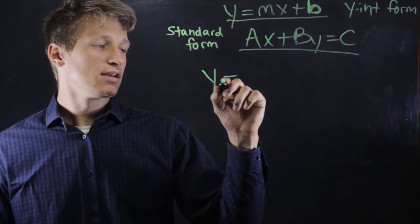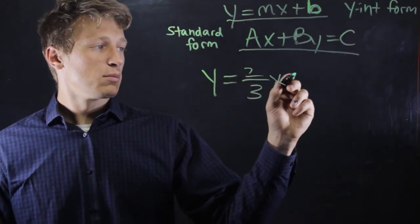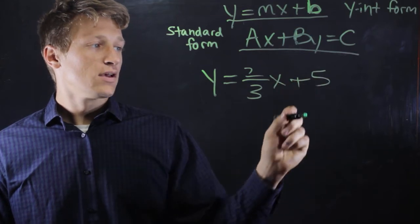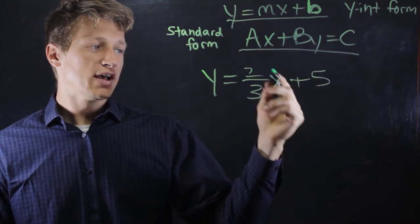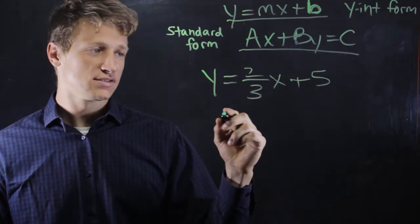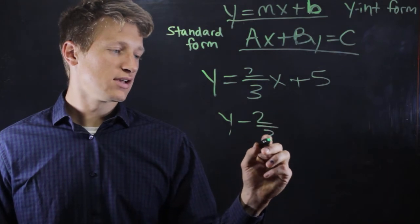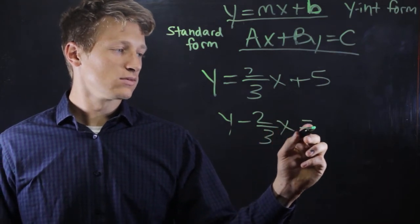Say we have y equals 2 thirds x plus 5. So the first thing we want to do is move the x to the left side, so we subtract 2 thirds x from both sides. So y minus 2 thirds x equals 5.